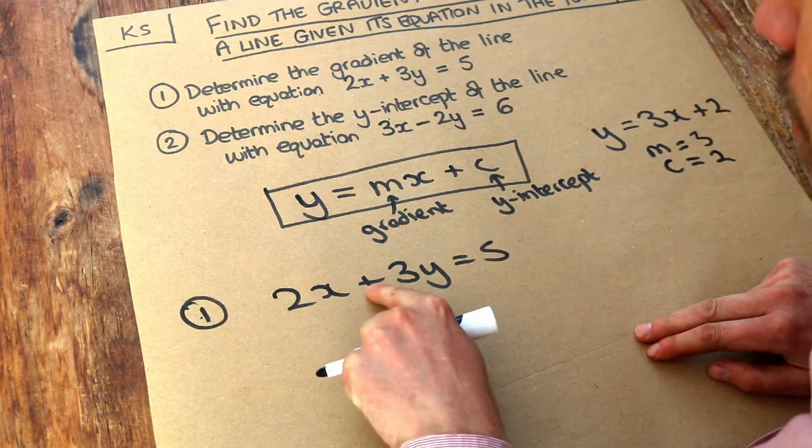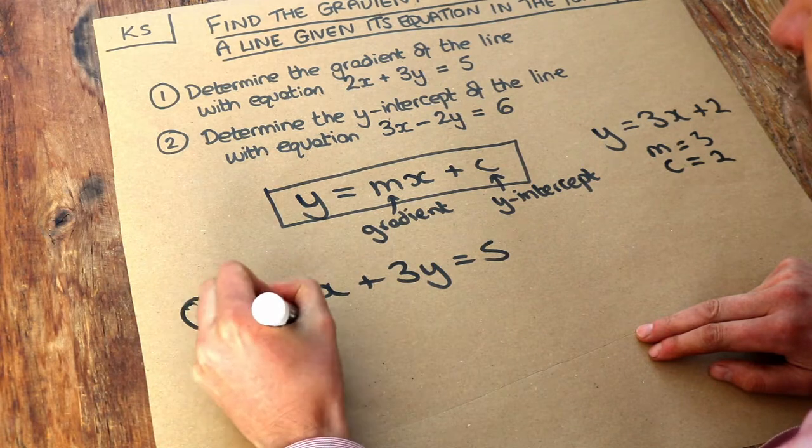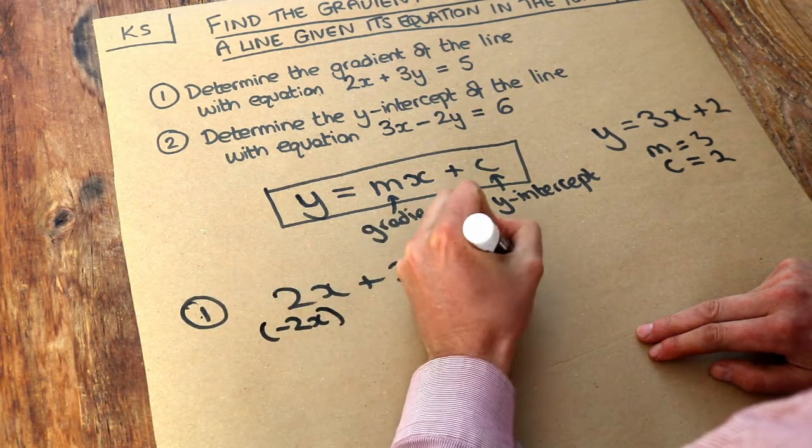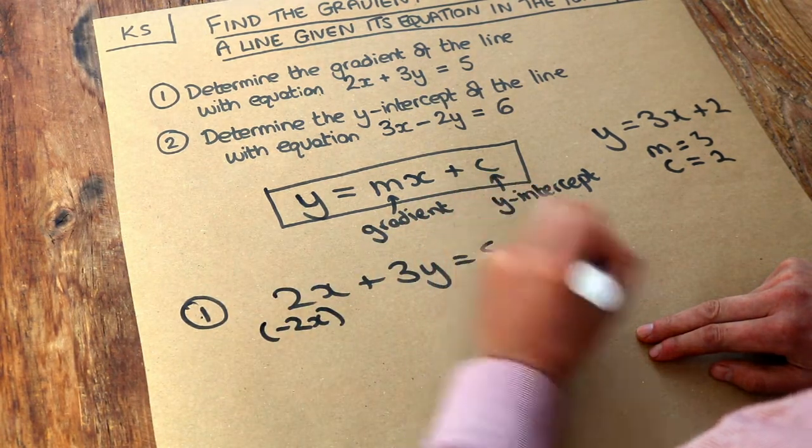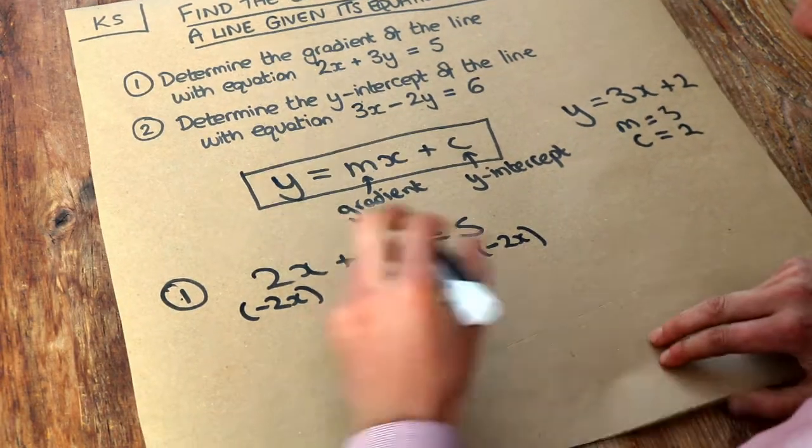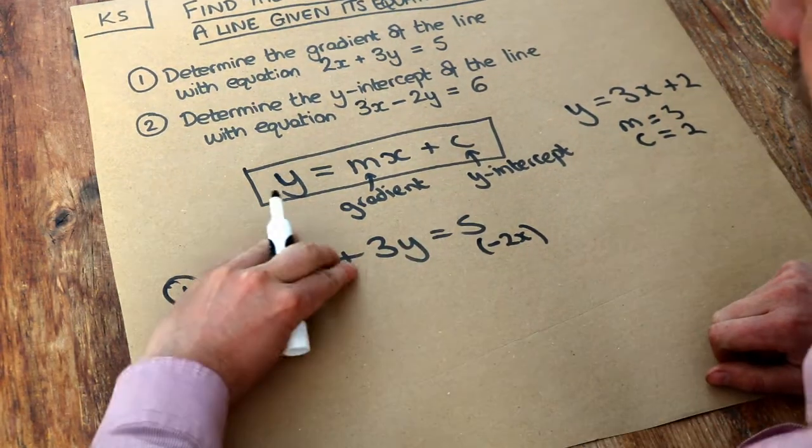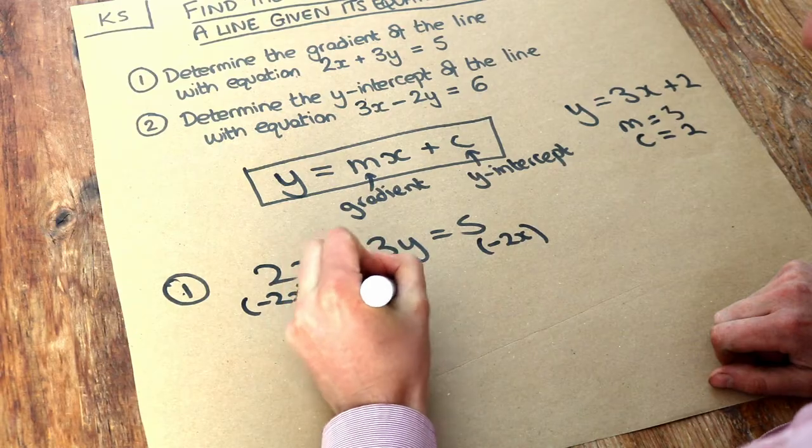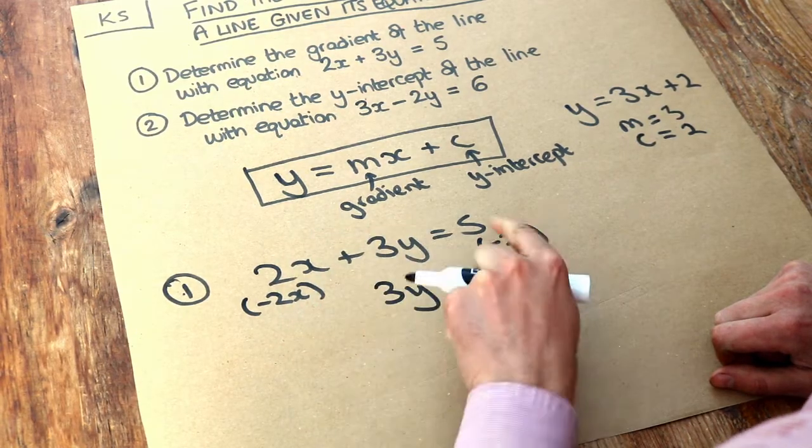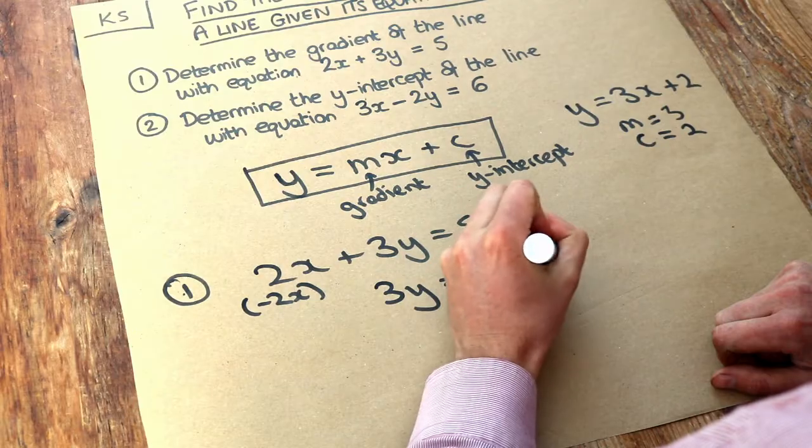We want to get rid of that plus 2x by subtracting 2x from each side. If you're not familiar with these skills, watch my videos on changing the subject. If we minus 2x from the left hand side, we get 3y. Subtract 2x from the right hand side, we've got 5 minus 2x.